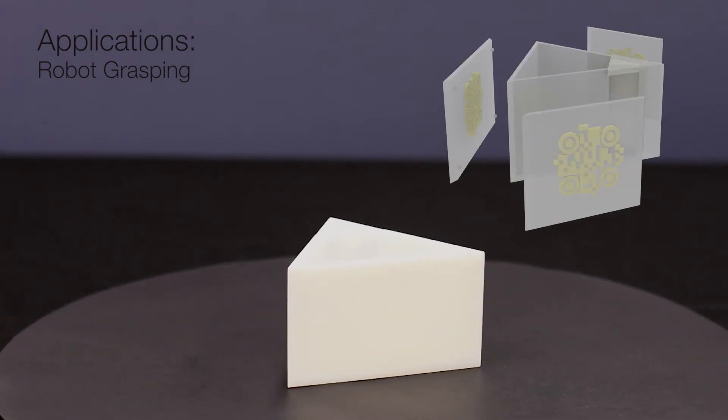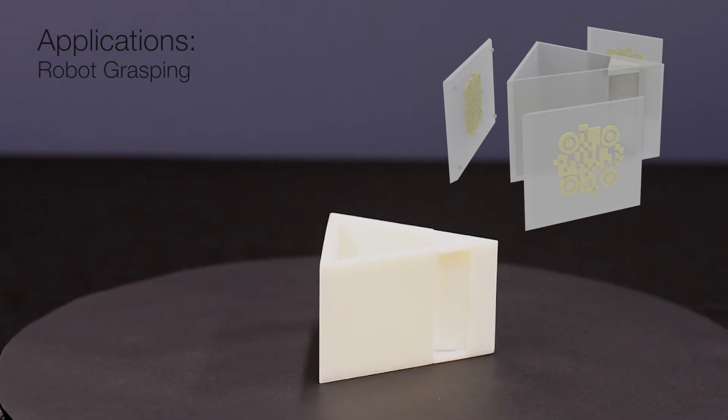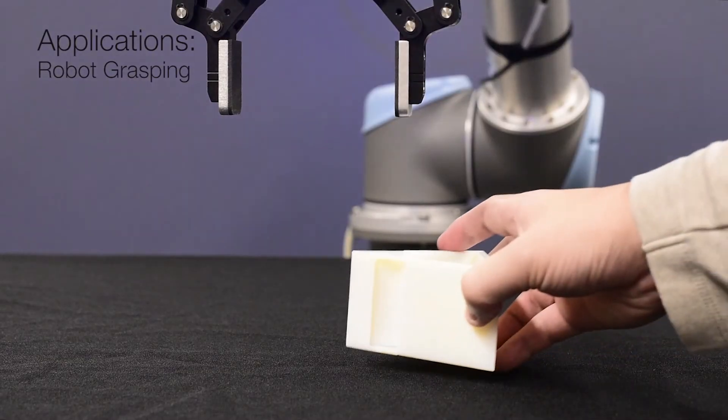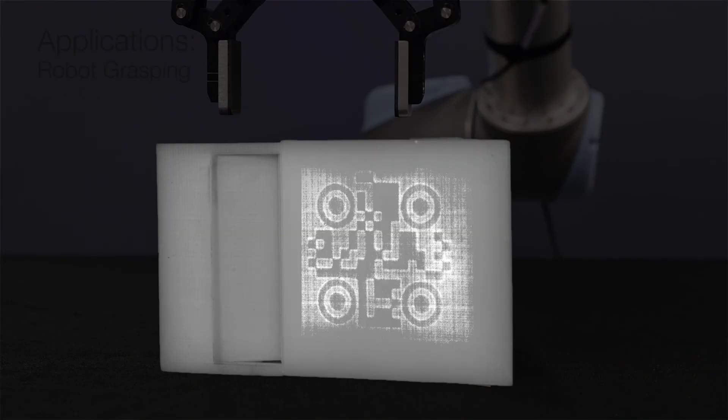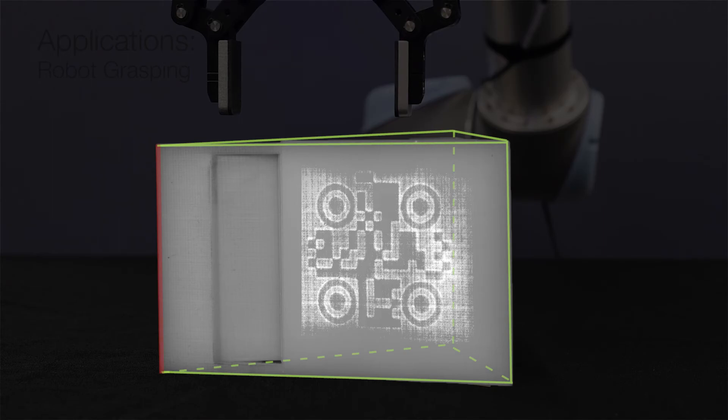In the triangular jar, we embed three different codes in each of the side faces. The codes specify the 3D shape of the object, while the markers help to estimate its orientation and location. The shape and pose together allow the robot to plan its grasping motion.